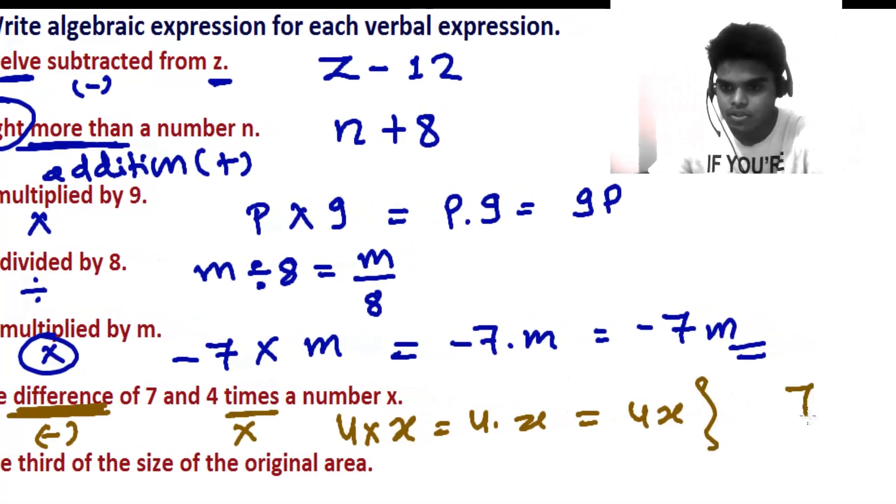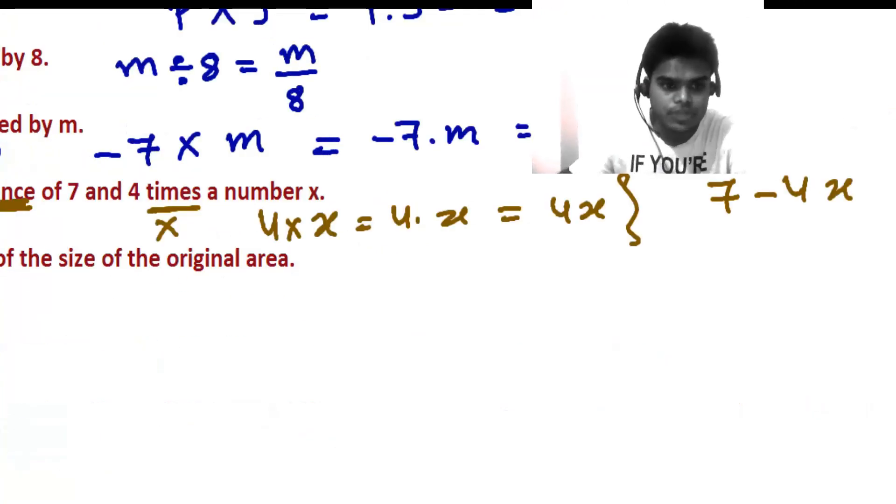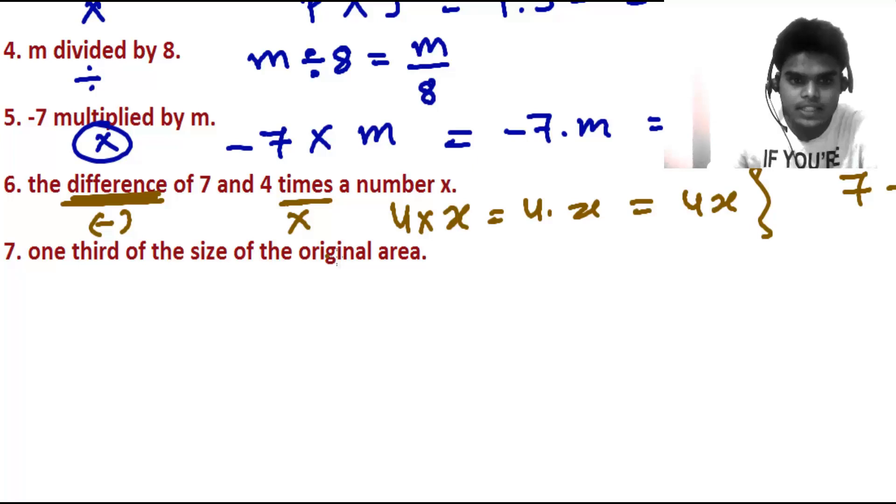Now here is the last question: one third of the size of the original area. The area they have not given us, so we can assume that as A. So one third of the size of the area A is one third of A.